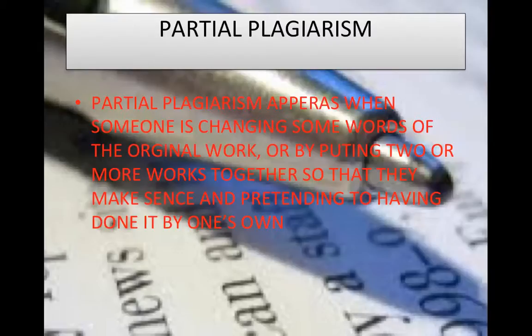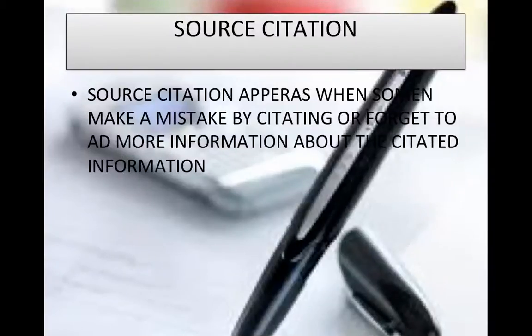The person then pretends to have done it by themselves. The third type — incorrect citation — appears when someone makes a mistake in citing a source, or forgets to add sufficient information about the cited material.